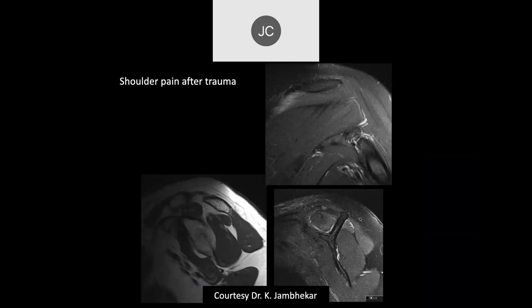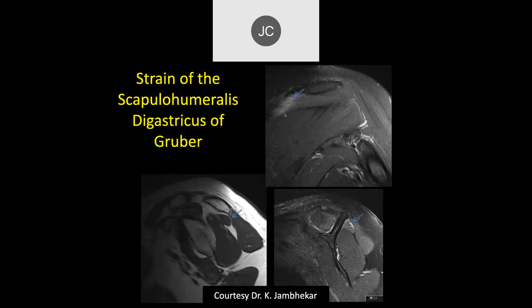Shoulder pain after trauma. On the subscapularis fiber on sagittal T2, it's pretty unremarkable. On PD fat sat, there's some edema around what I think is the supraspinatus muscle. This is a strain of the subscapularis humeralis digastricus, which is an accessory muscle — also quite rare — and this is what happens to be torn.